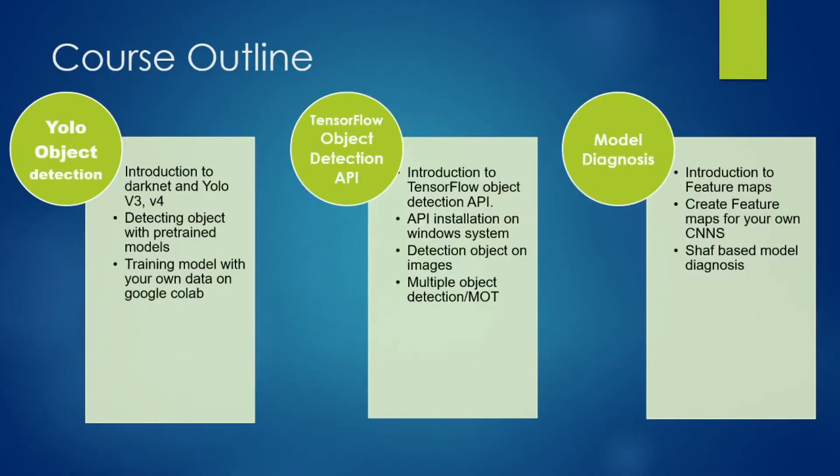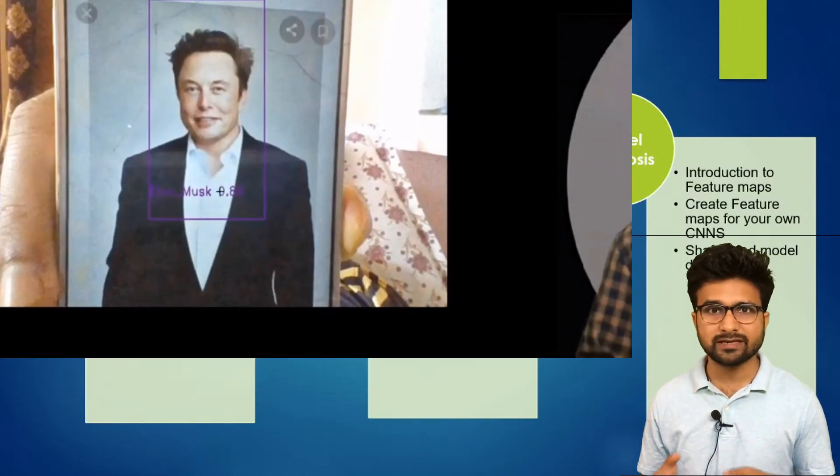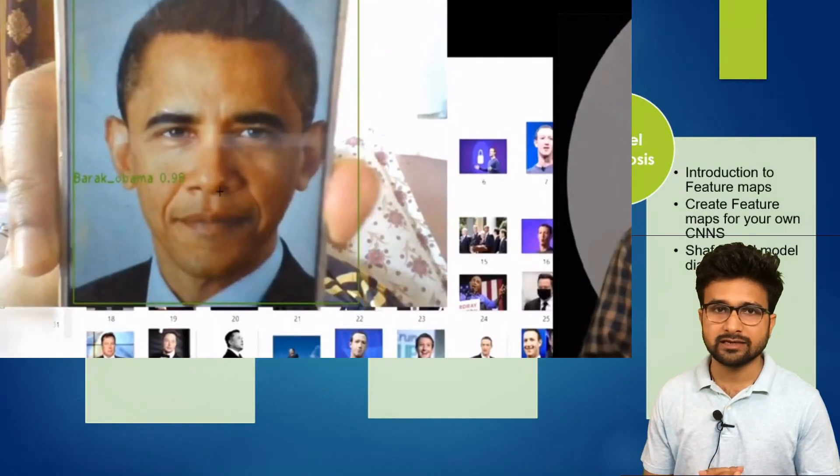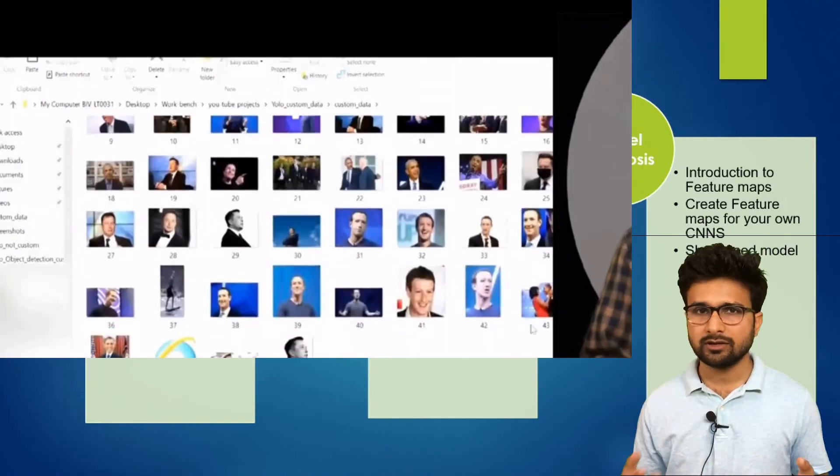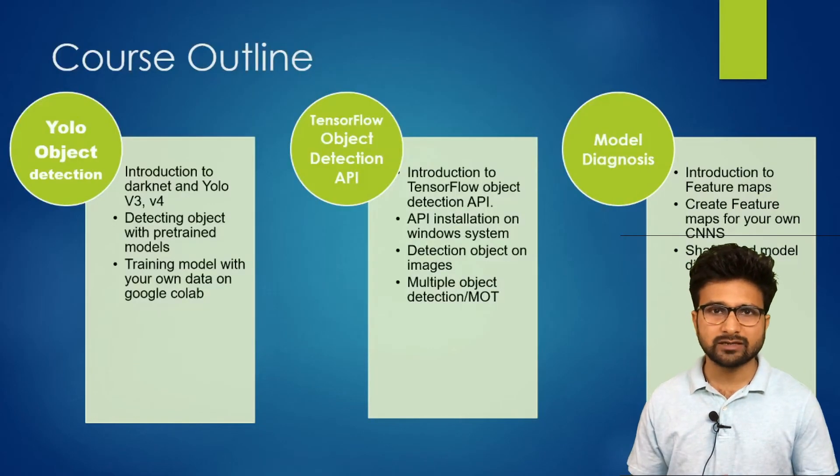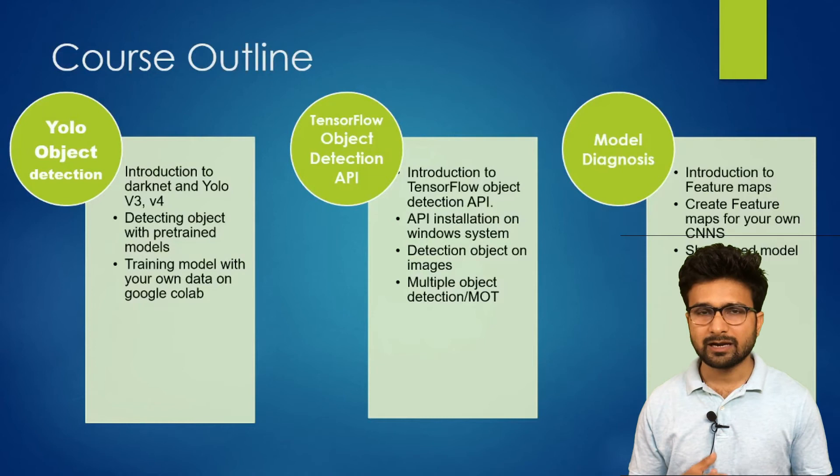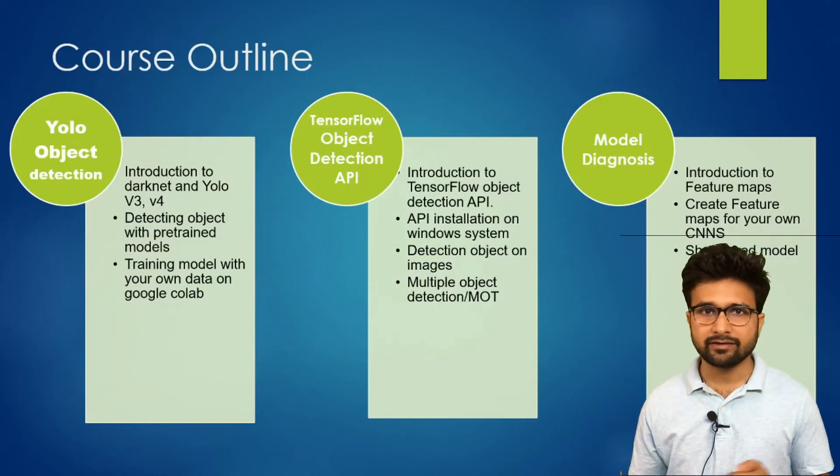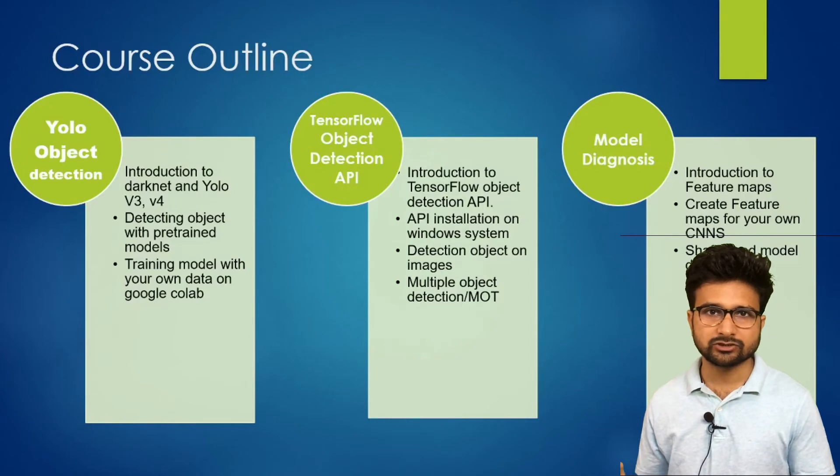Once we are done with the classification part, we will get into the detection part. We will first use YOLO-based object detectors. Here also we will have the hands-on exercise with our own dataset. Like you can take your own images and train a YOLO-based detector for yourself. Then we will understand what is the difference between YOLO-based detectors and TensorFlow-based object detection API.